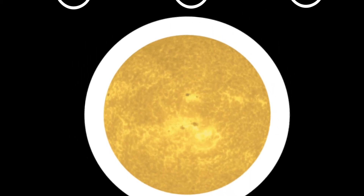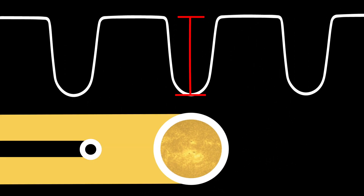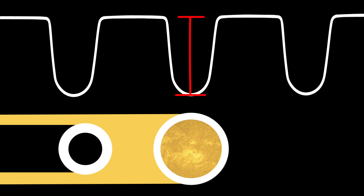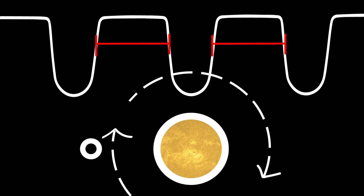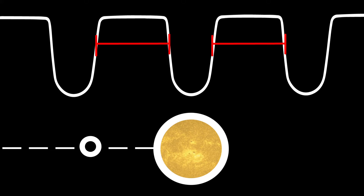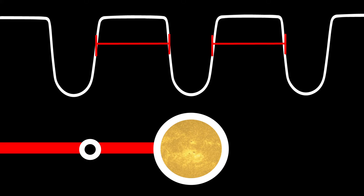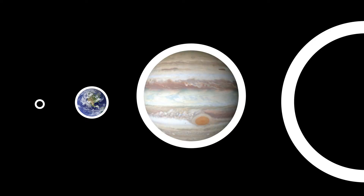We can learn a lot about an exoplanet by measuring its transit. The amount of light blocked tells us how big the planet is compared to the star it orbits. The length of time the light is blocked can teach us how fast the planet is moving. The time between each transit tells us how long the planet takes to orbit the star — the length of that planet's year. Using this data, we can learn the size of the planet: is it Earth-sized, Jupiter-sized, bigger or smaller than any planet in our own solar system?